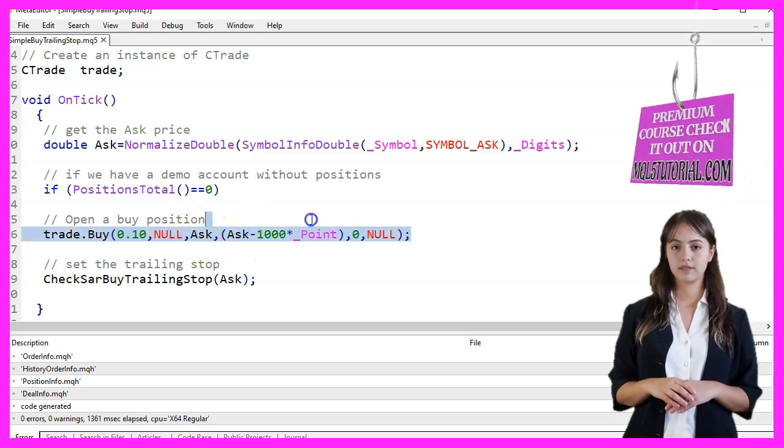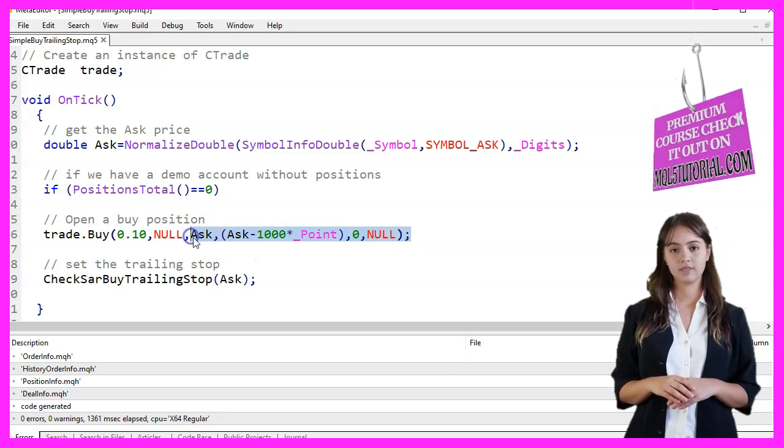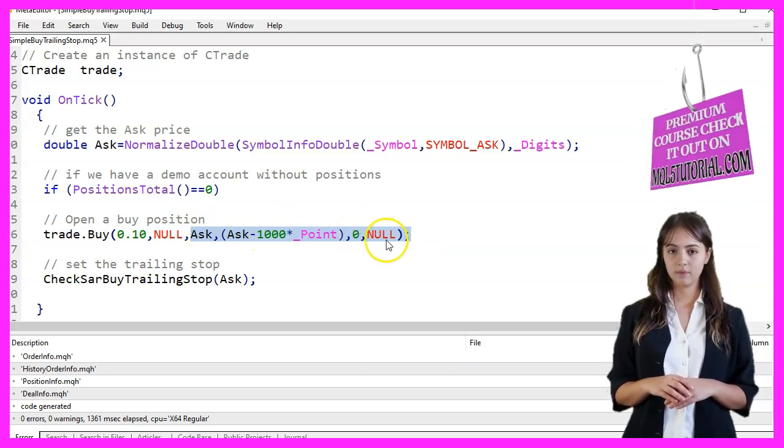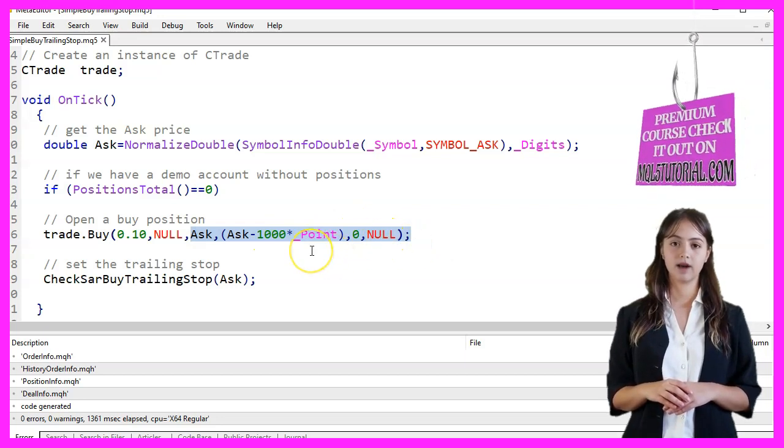AskPrice, StopLoss set 1000 points below the AskPrice, TakeProfit set to 0 meaning no take profit, and a comment, Null.